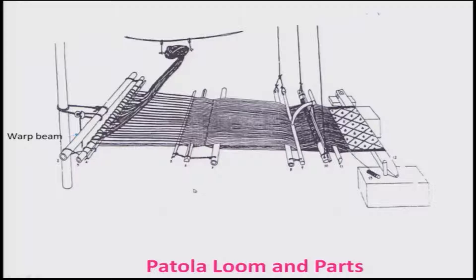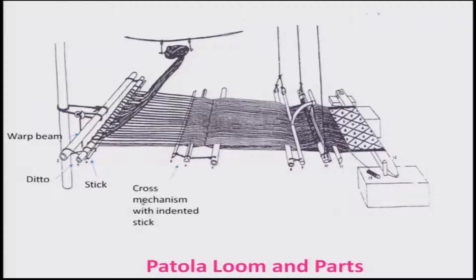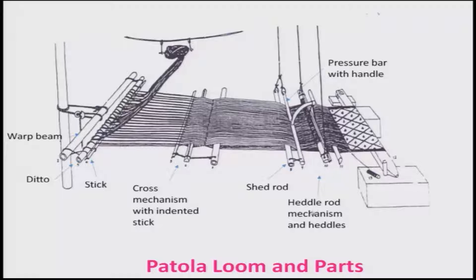Let us look at another loom — the patola loom — and its various parts. There is the warp beam and the stick wound to the warps. The cross mechanism with the intended stick and the shed rod help make the separation of warps. This is the pressure bar and handle. The heddle rod mechanism helps separate the warps, and the sword is used as a beater.